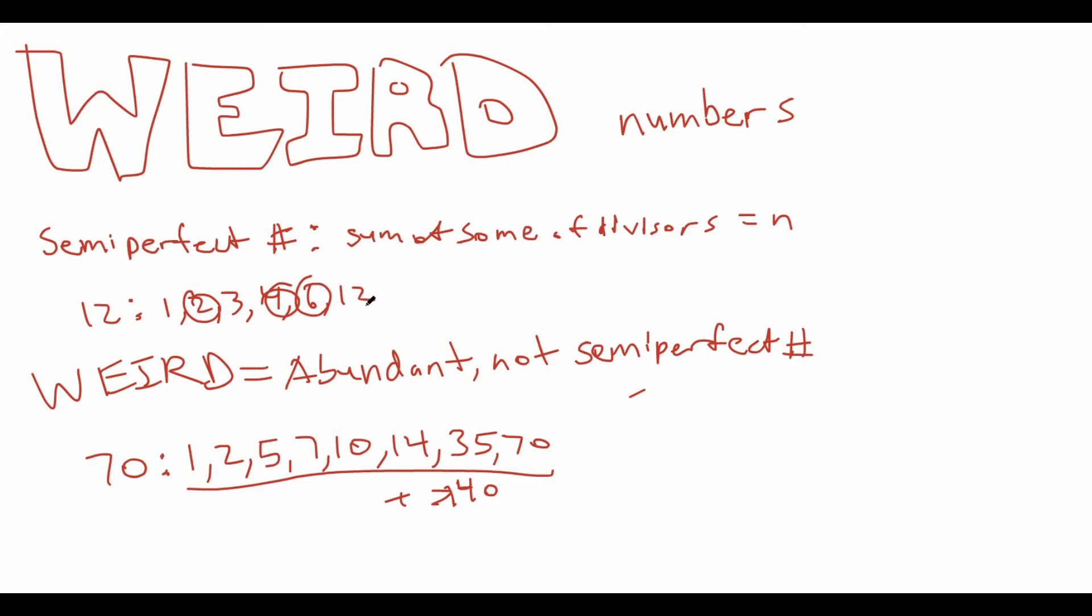And, if you keep on checking each of the possibilities, you can see that no matter what numbers you choose in here, you can never get it to sum to 70. This is never possible. So, therefore, 70 is a weird number.